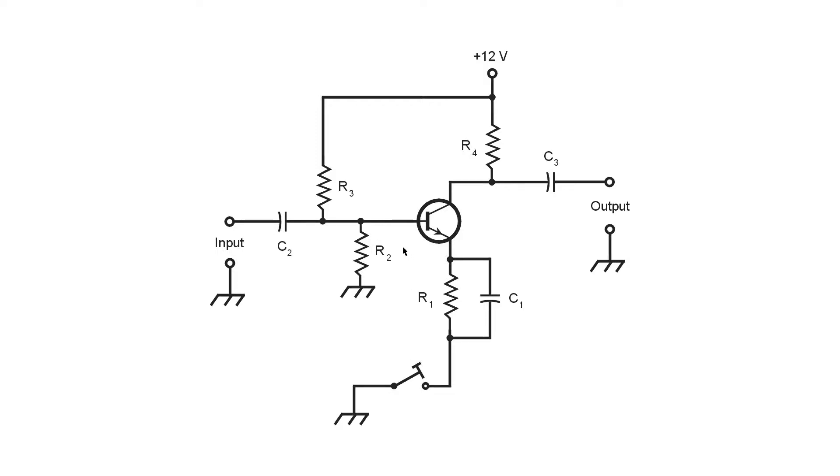And it works better than cathode keying does because, under normal circumstances, the base-collector junction is reverse biased. So when you remove anything from the emitter, you have, in effect, a diode that is in a state of cutoff but not past the avalanche point.